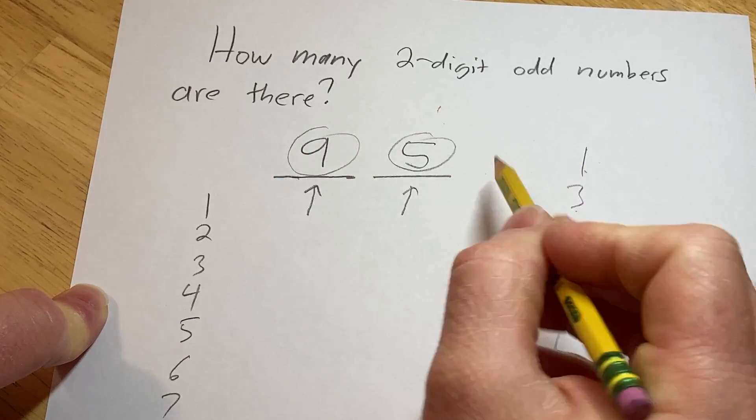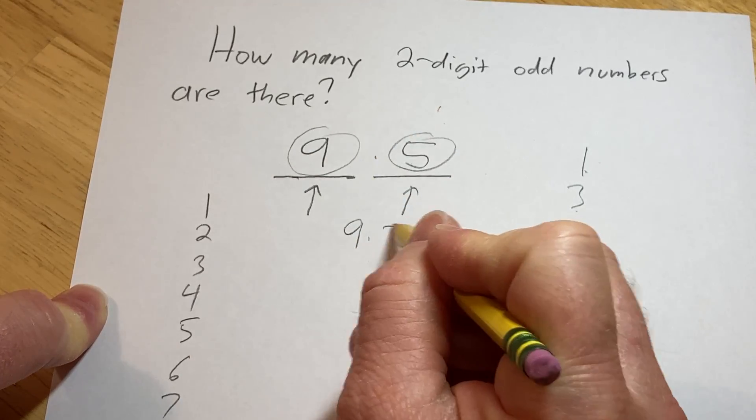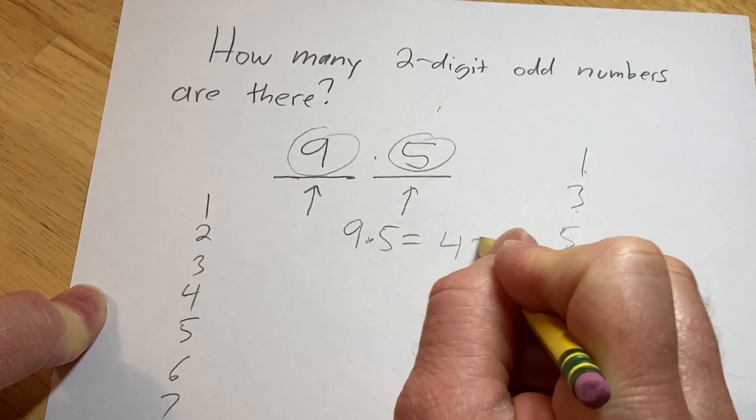It also requires picking the second digit, and there are 5 ways to do that. The number of ways to do both things is the product, so 9 times 5 equals 45.